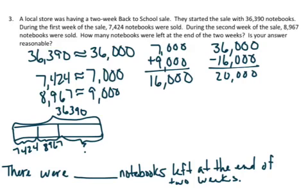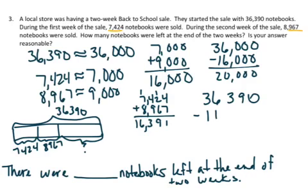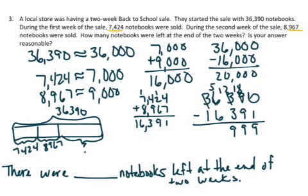To do this with finding the exact amount, we're going to use the numbers that were given to us in the problem, but do the same steps that we did with our rounded numbers. First we need to add the first week of sales and the second week of sales, which gives us a total of 16,391 notebooks that were sold for the first two weeks of sales. Now we're going to find the difference. So 36,390 minus 16,391 gives me a total of 19,999. So there was 19,999 notebooks left at the end of two weeks.